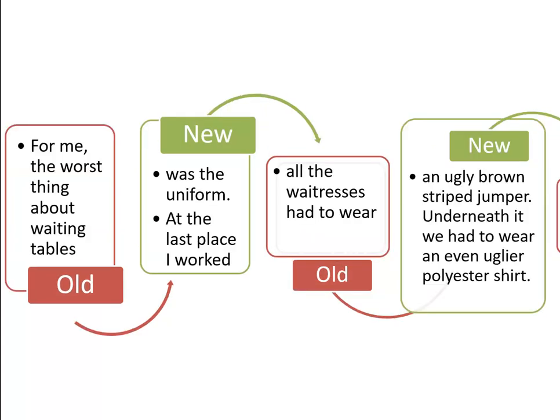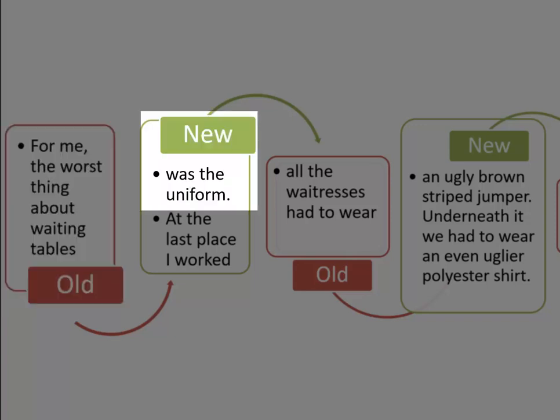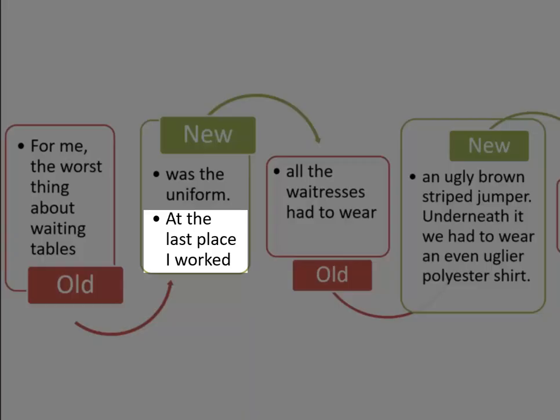Let's see how this passage does that. The first part of the first sentence is said in a manner that implies that before the start of this passage, the author had been talking about waiting tables. And now she's moving this discussion on to her particular experience with the uniform. Notice how the second sentence starts with new information.